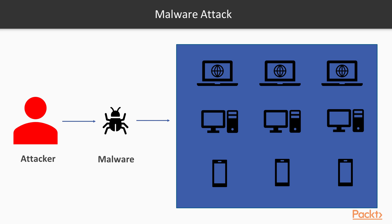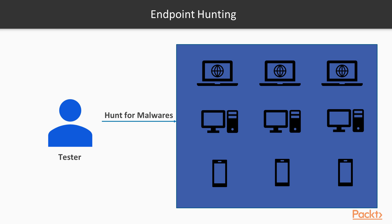The work of a tester or threat hunter is to hunt for these kinds of malware in the endpoint. This is called the basics of endpoint hunting. Hunting for malware, hunting for vulnerabilities or weaknesses in the endpoint, is called endpoint hunting, and it is done by an endpoint hunter or tester. These are the basics of endpoint hunting.